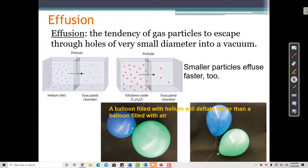That's because there are small holes in the rubber of the balloon, even though it seems solid. There are tiny holes, and the helium particles have less mass than the particles of air, which are oxygen and nitrogen. So the helium particles can effuse faster through the balloon, through the small holes in the balloon, and it seems to deflate faster. It seems to run out of gas quicker than the balloon that's filled with air.